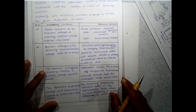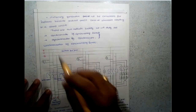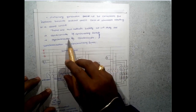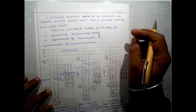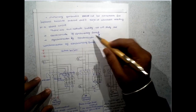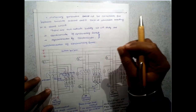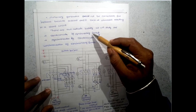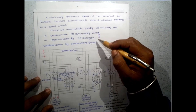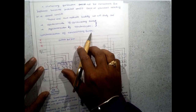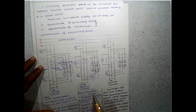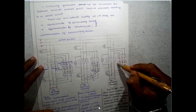Next we will move to the different methods of synchronization. Students will learn two methods: one is synchronization by synchronizing lamp, another is synchronization by synchroscope. Nowadays, computers are used in power plants to perform this function. But students will learn these methods for a better understanding of their electrical subjects. Under synchronization by synchronizing lamp, there are three methods: three dark lamp method, three bright lamp method, and two bright one dark lamp method.